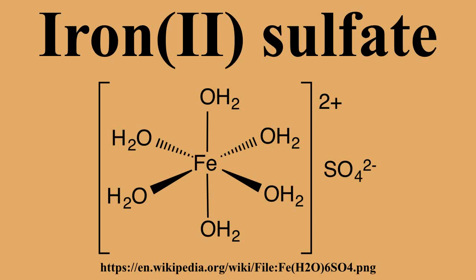Iron sulfate, or ferrous sulfate, has the formula iron(II) sulfate·xH₂O. These compounds exist most commonly as the heptahydrate but are known for several values of x. The hydrated form is used medically to treat iron deficiency and also for industrial applications. Known since ancient times as copperas and as green vitriol, the blue-green heptahydrate is the most common form of this material.